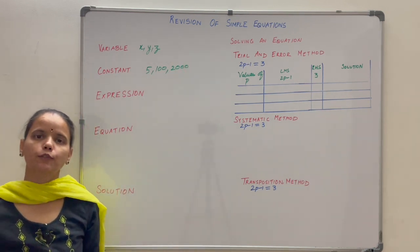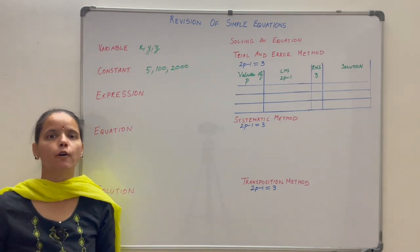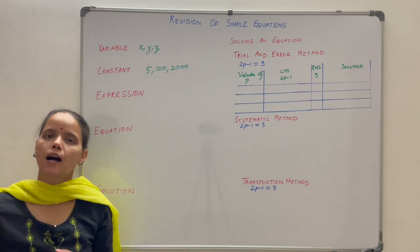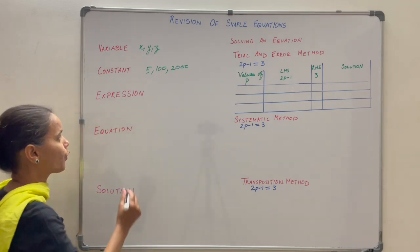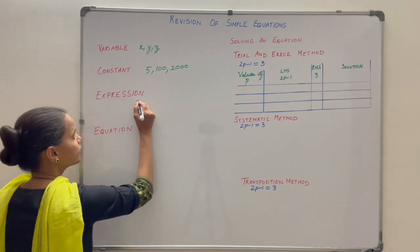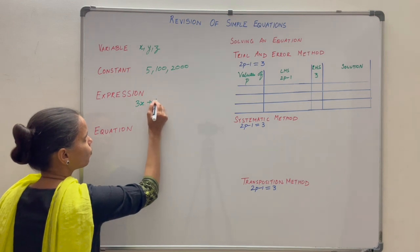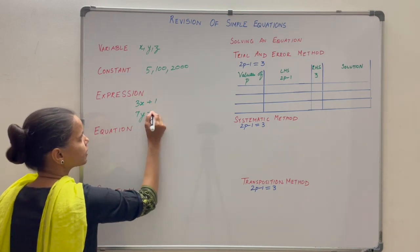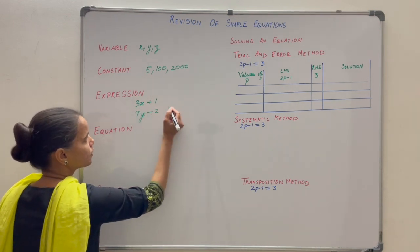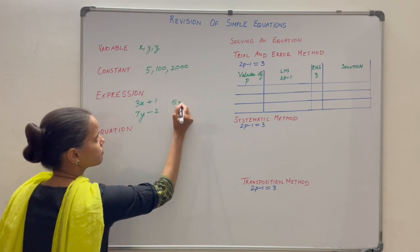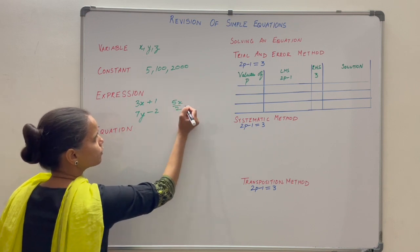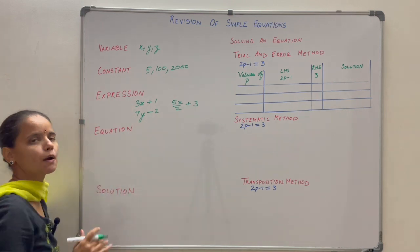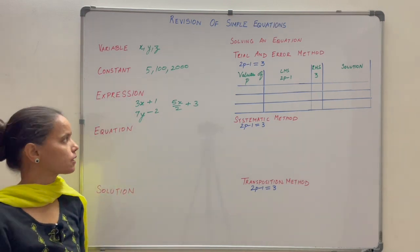Expression — it is formed with the help of variables, constants and arithmetic operators. For example, 3x plus 1, 7y minus 2, 5x by 2 plus 3. All these are examples of expressions.